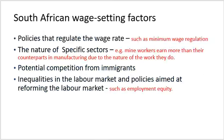In South Africa there are other factors affecting wage determination, such as policies regulating wage rates — like the minimum wage regulation — as well as the nature of specific sectors. For instance, workers in the mining sector are more likely to earn more than their counterparts in manufacturing. There is also potential competition from immigration, as laborers from neighboring countries come to South Africa seeking better conditions. Additionally, inequalities in the labor market and policies such as the employment equity policy play a very big role in determining wages in South Africa.